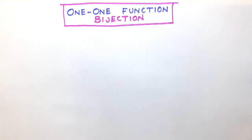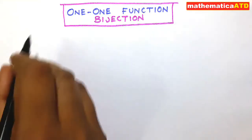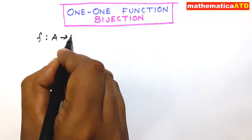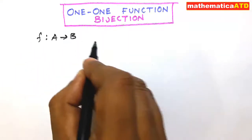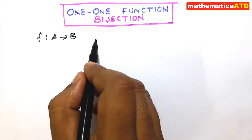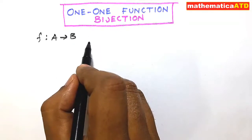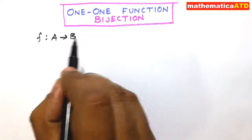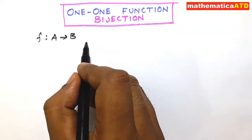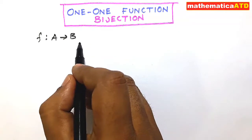The topic is bijective function, also called a one-one function. A function f from set A to set B is a bijective function if it is simultaneously a one-one as well as an onto function.